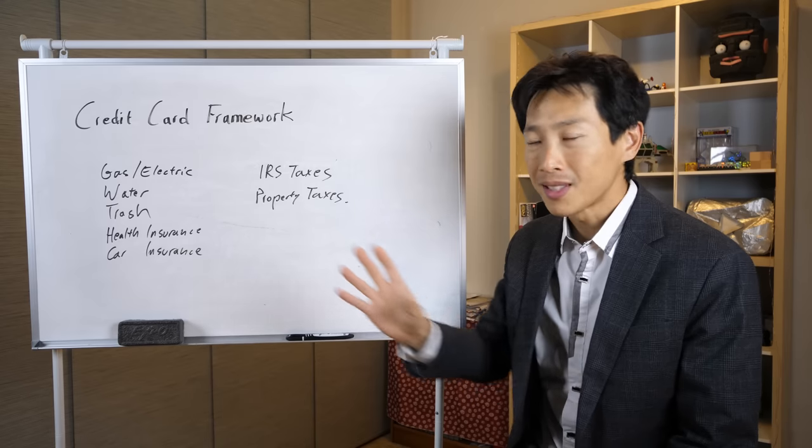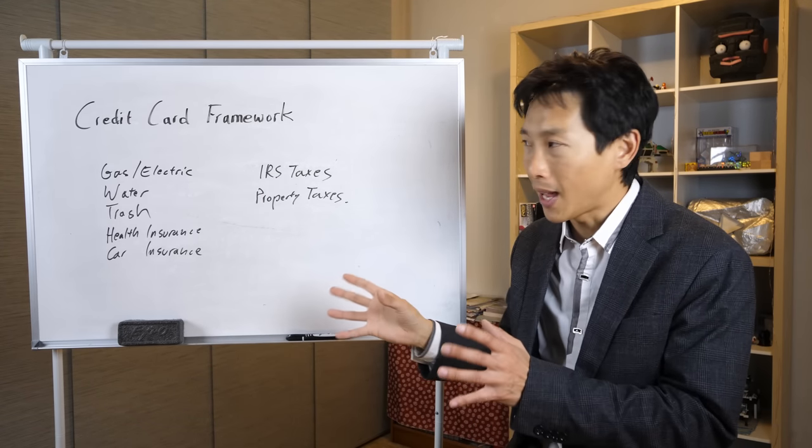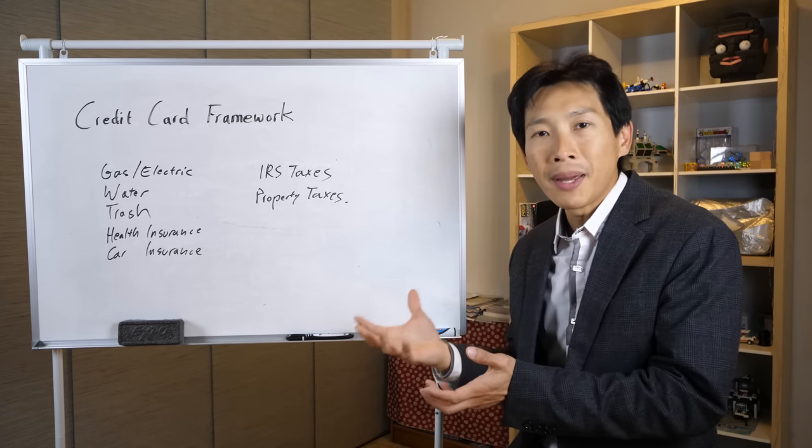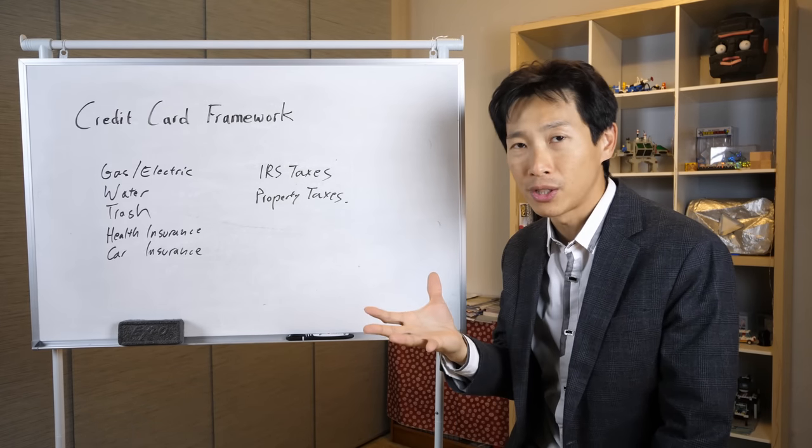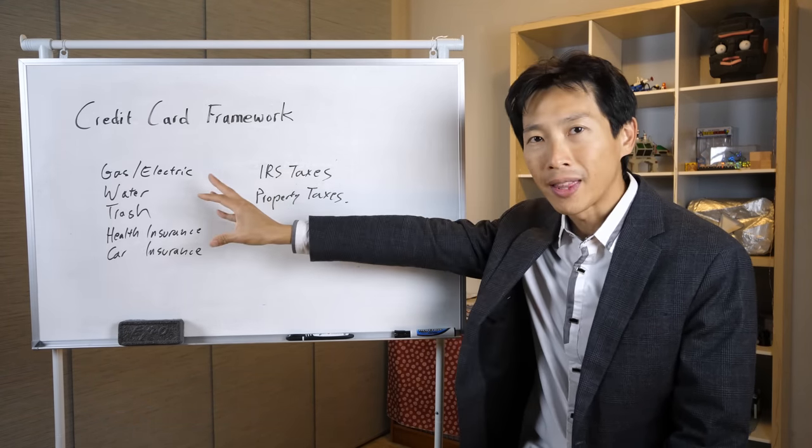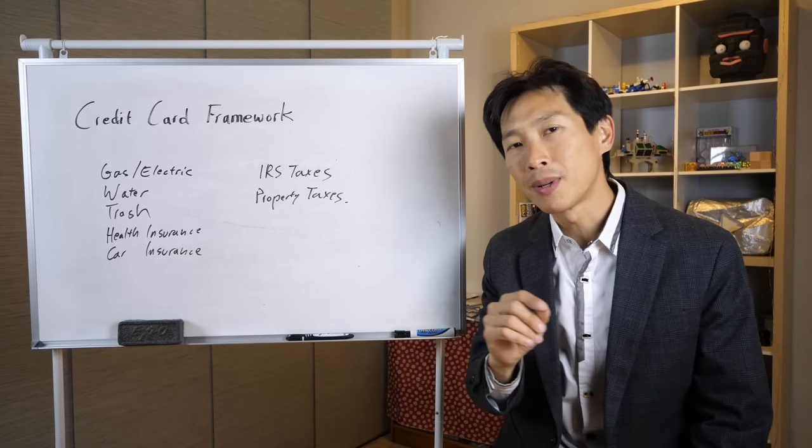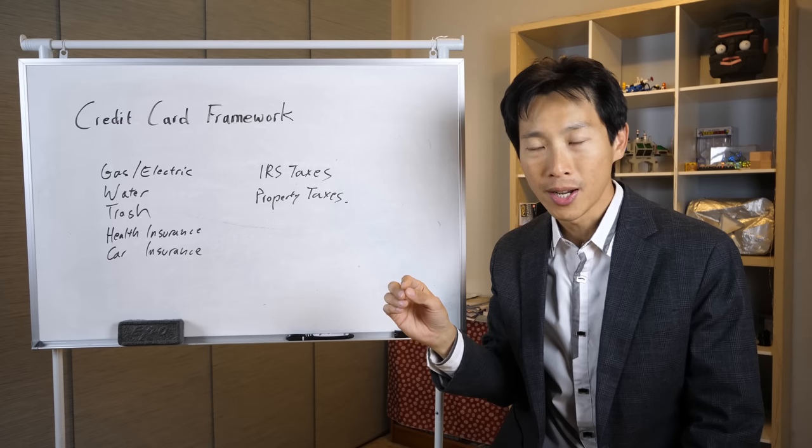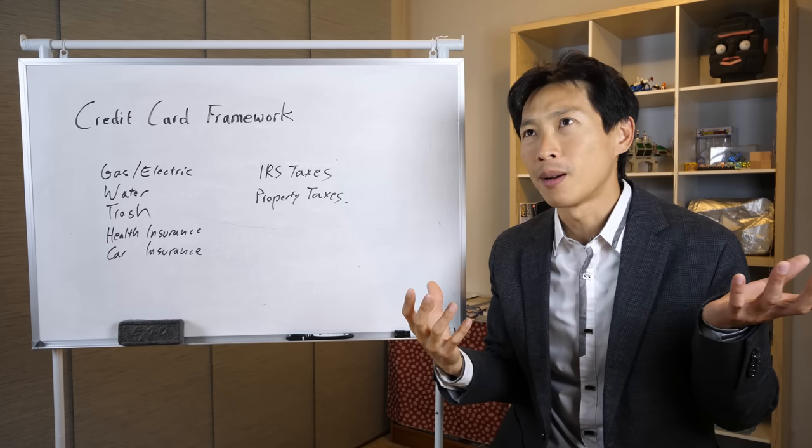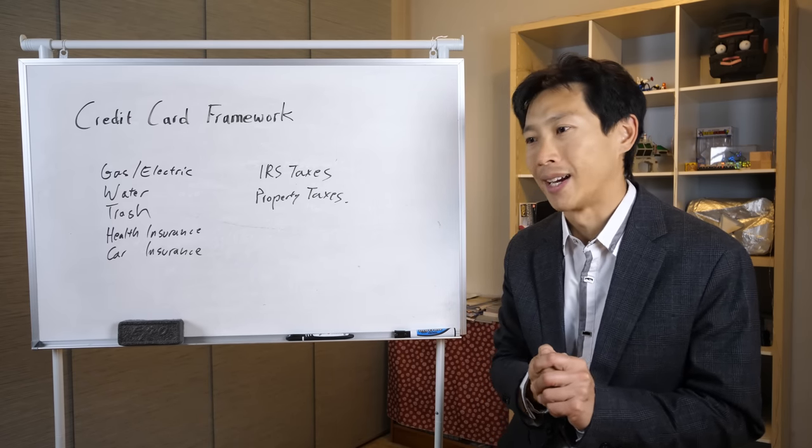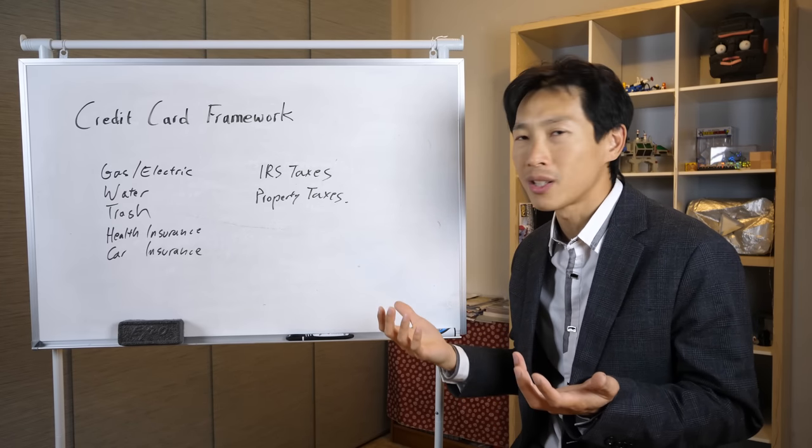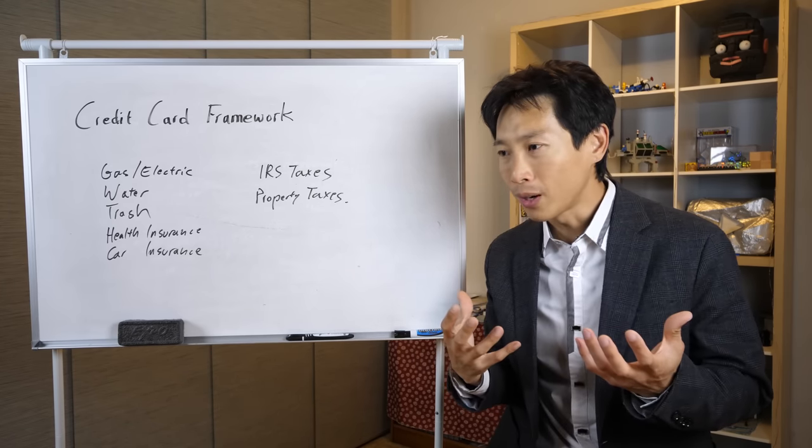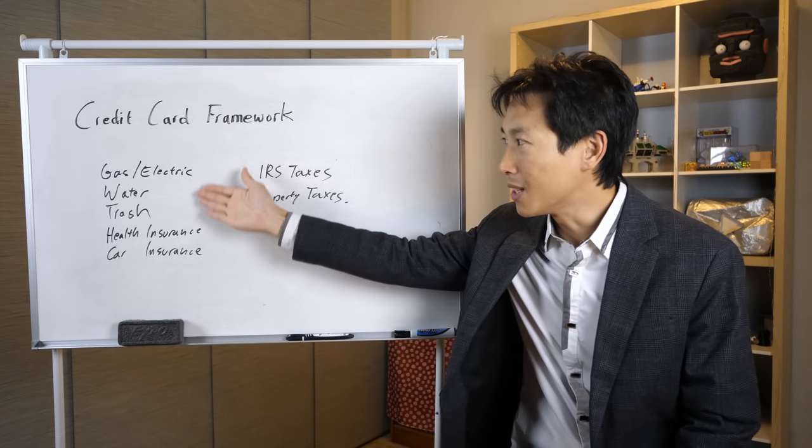On top of that, a lot of times these utilities will actually allow you to prepay many, many months in advance. For example, right now on my gas, electric, water, and trash, I have several hundred dollars that's just stored up in there. Why do I have this is because I was churning a credit card and I needed to spend like some $1,500. And I'm like, I don't have anything to buy. I don't need to buy a lot of groceries. I don't need to buy gadget gizmos or anything. So therefore, I prepay into these things.